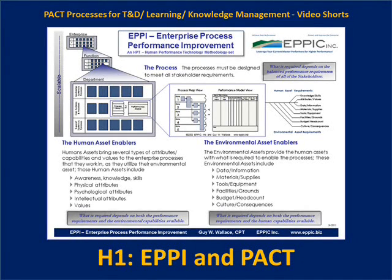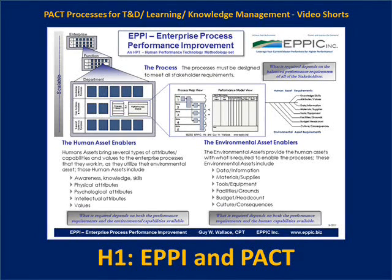What's required of the human assets depends on what the process is and what environmental enablers are available. Do I need physical strength, or do I get to use a forklift truck? The environmental asset enablers enable the humans, and the humans facilitate and use the environmental assets within the process. Those environmental assets include data and information, materials and supplies, tools and equipment, the facilities themselves and the grounds, budget and headcount, and the culture and consequences. Humans exist within facilities and cultures, and there are consequence systems that govern the positive and negative consequences — short term and long term — that affect human behavior.